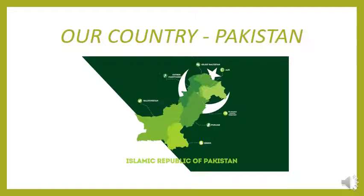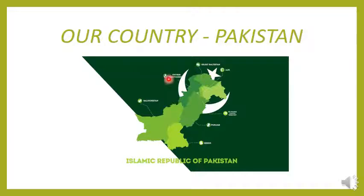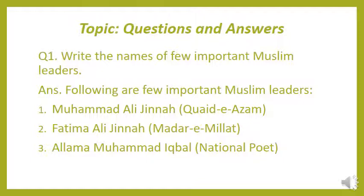There are four provinces in Pakistan, and we discussed their capitals, their special places, and their landforms. Now it's time for a wrap-up — the question and answers for this recorded class. You need to take out your social studies copies and make a title page. The first rule of starting any work is to make a title page, which is for our chapter 'Our Country Pakistan.' I have attached a picture — I really love the dark green colour of our flag.